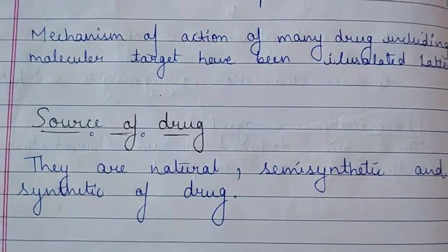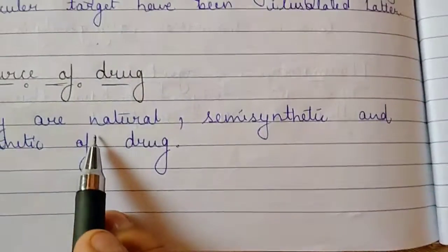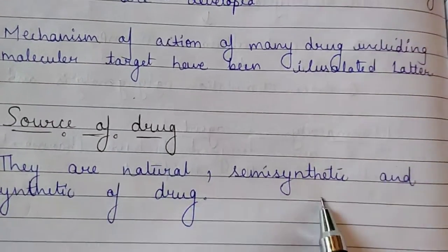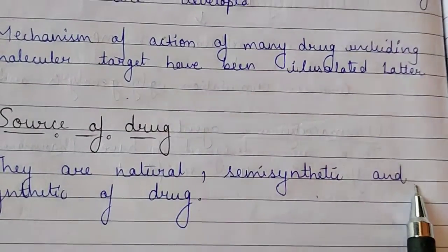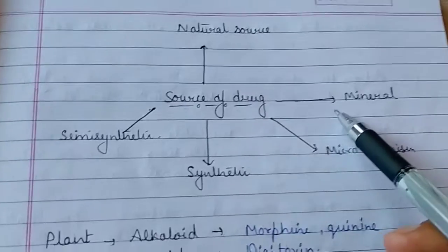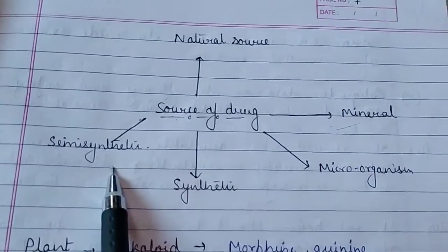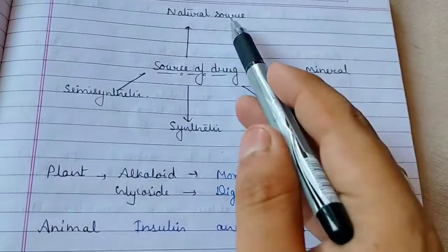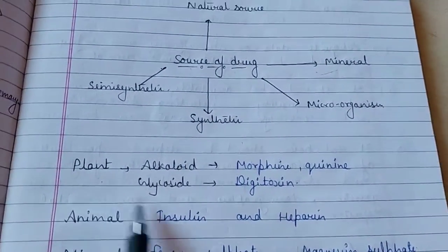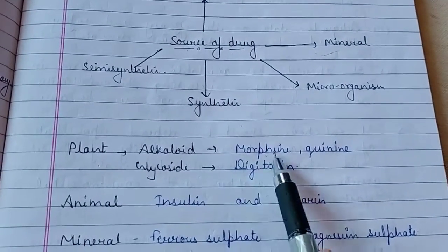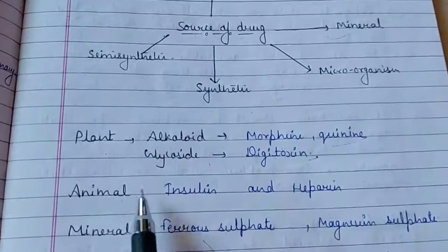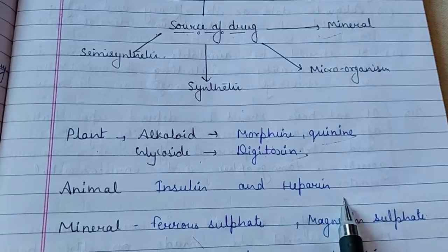Sources of drugs can be natural, semi-synthetic, or synthetic. Natural sources include plants — providing alkaloids and glycosides such as morphine, quinine, and digitoxin — and animals, providing insulin and heparin. Minerals such as ferrous sulfate and magnesium sulfate are also natural sources.